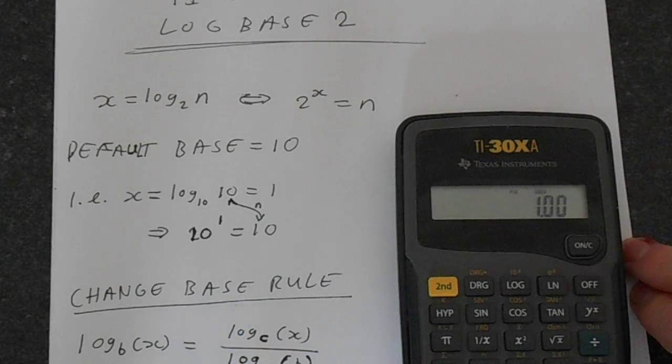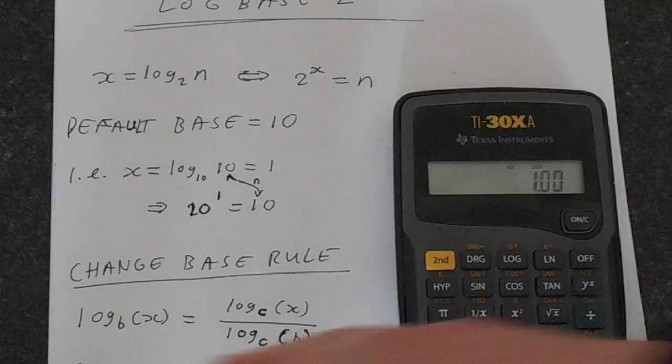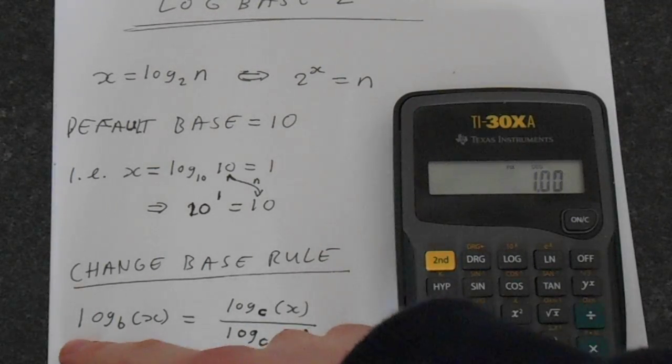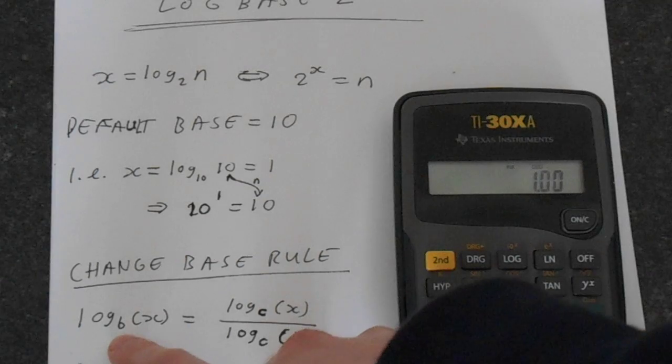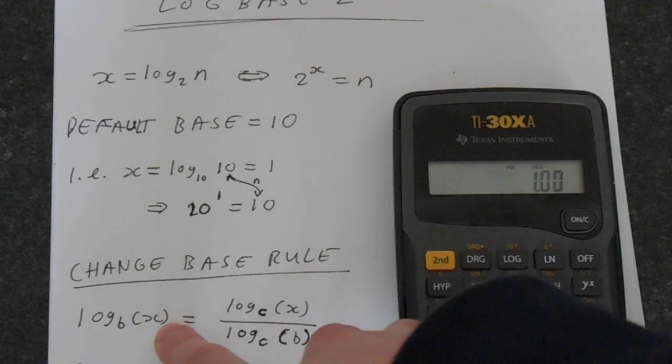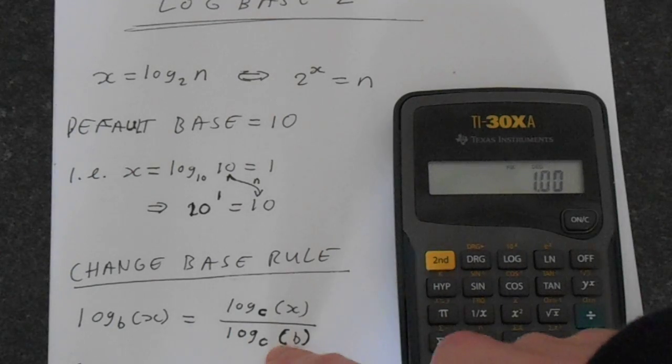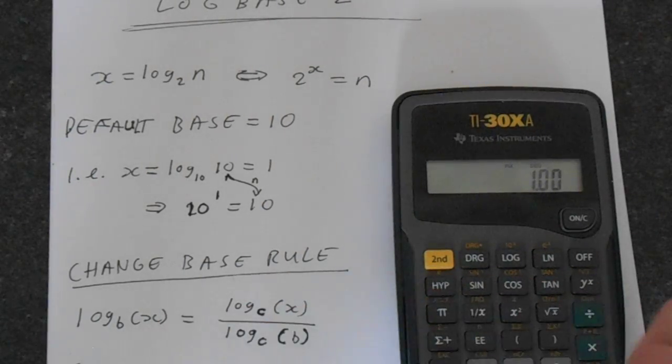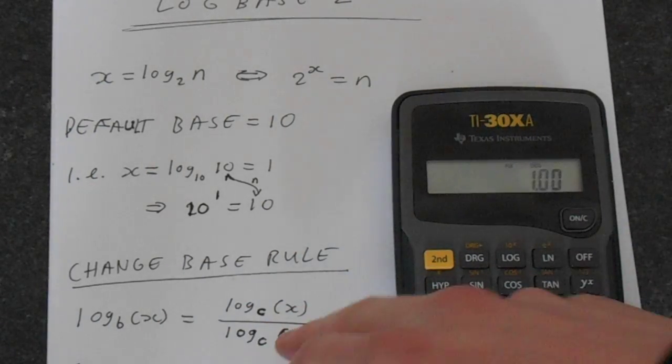Okay, so let's look at the logarithm change of base rule. So the rule basically states, mathematically, I'll explain this so don't worry if it looks complicated. Basically log base b of x, where x is what we're finding the logarithm of, equals log c of x over log c of b. So you see these two b's match up and these two c's match up and the x is what you're looking for.